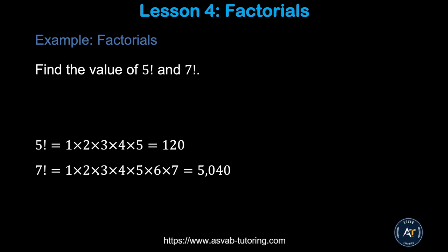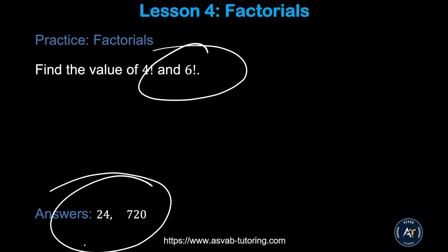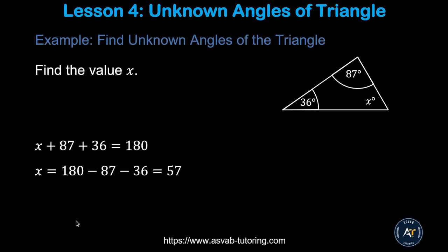Now we'll learn how to find a factorial. Factorial 5 means 5 times 4 times 3 times 2 times 1, which equals 120. Factorial 7 equals 1 times 2 times 3 times 4 times 5 times 6 times 7, which equals 5,040. Try the two practice problems by yourself and make sure you get those two answers.